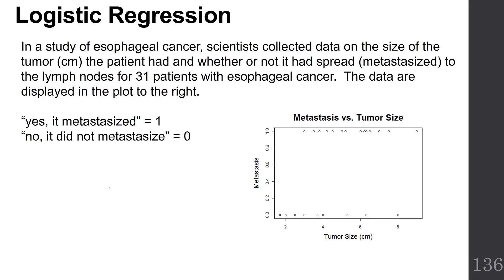In a study of esophageal cancer, scientists collected data on the size of the tumor in centimeters and whether or not it had spread, which is called metastasis, to the lymph nodes for 31 patients with esophageal cancer. The data are displayed in the plot to the right.